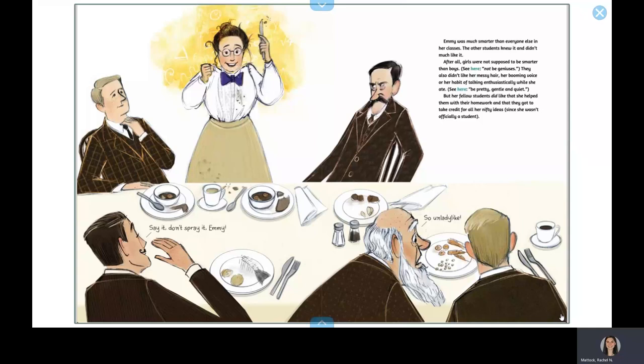Emmy was much smarter than everyone else in her classes. The other students knew it and didn't much like it. After all, girls were not supposed to be smarter than boys. They also didn't like her messy hair, her booming voice, or her habit of talking enthusiastically while she ate.